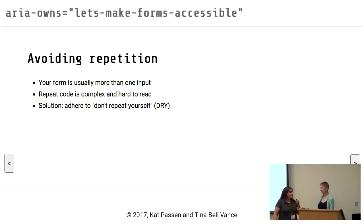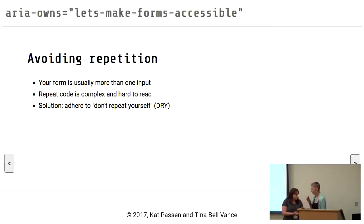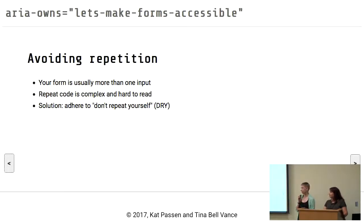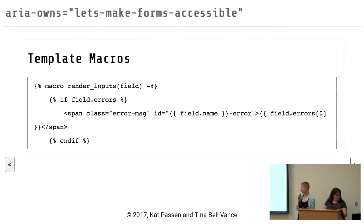So this form is gonna get big. We don't want to write all of that over and over. If you've got a form that goes beyond just a couple of inputs — say, a payment form — that was like 10 to 15 lines of code, and you'll have a 1000-line template in no time. So what we're going to do is adhere to the DRY principle — don't repeat yourself — and use something called template macros, which works like declaring a Python function in your template.